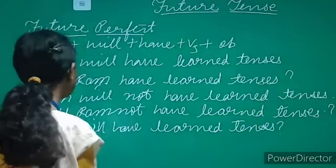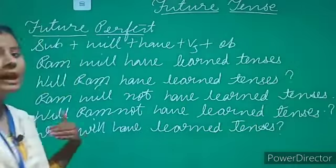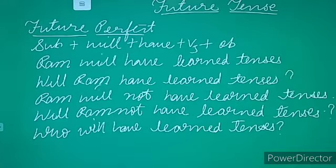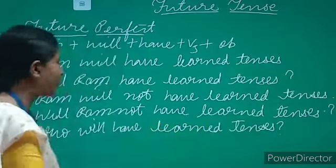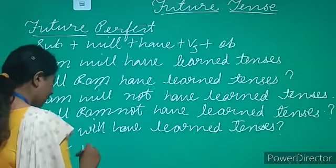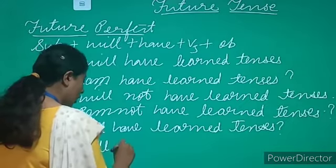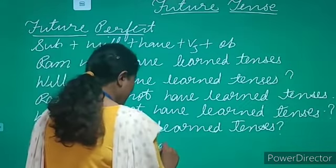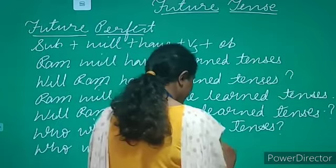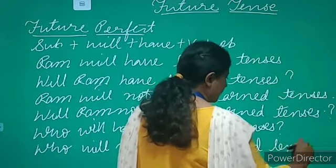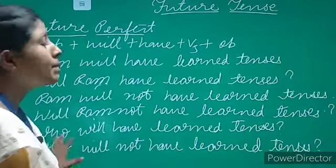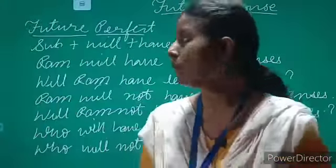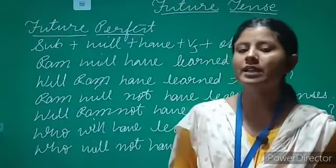And if you want to frame the WH-word negative sentence, then you write: 'Who will not have learned tenses?' with a question mark. So this is future perfect tense. I hope it is clear. Now let's move forward and understand future perfect continuous tense.